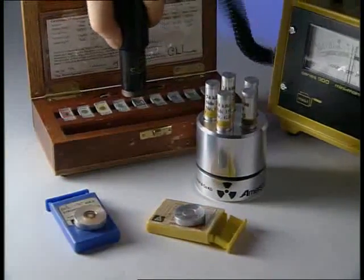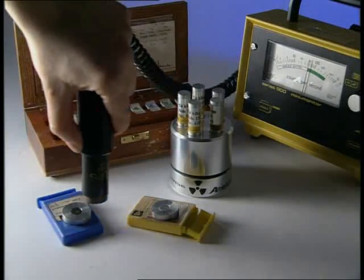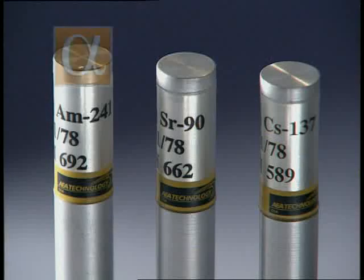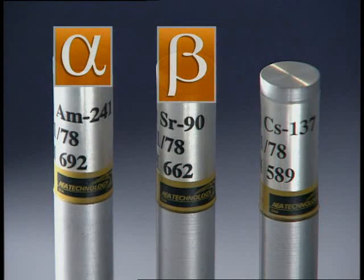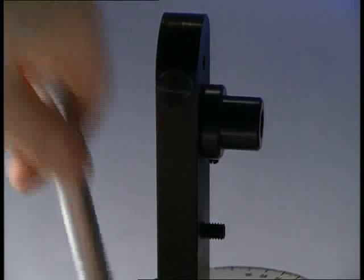It's invisible, but an easy way of detecting it is to use a Geiger-Müller tube attached to a counter. There are three different types of nuclear radiation: alpha, beta, and gamma. Each has a different penetrating power.